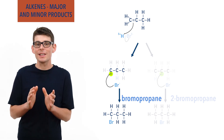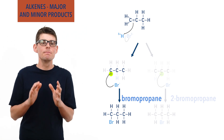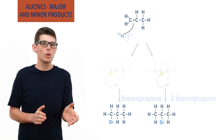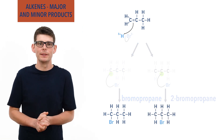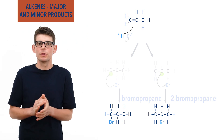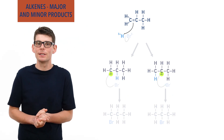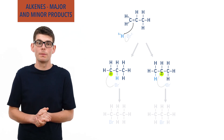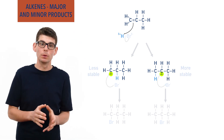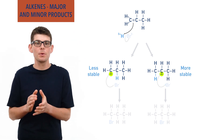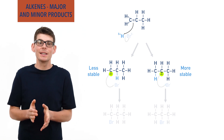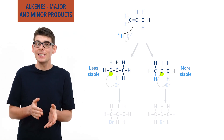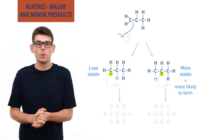When the reaction is actually carried out, there is much more 2-bromopropane formed than 1-bromopropane. This is because the secondary carbocation intermediate that leads to 2-bromopropane formation is more stable than the primary carbocation that leads to 1-bromopropane, making it easier and more likely to form.